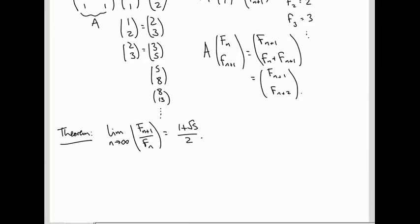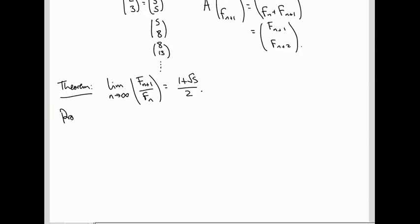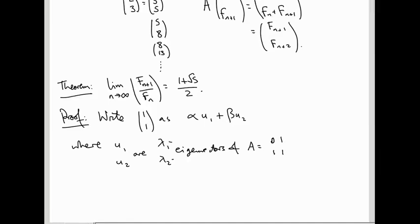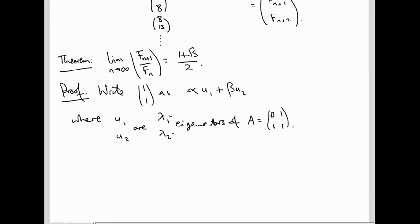Here's the proof. First of all, like in the last two applications, we're going to write our vector [1,1] as α·u1 + β·u2, where u1 and u2 are the λ1 and λ2 eigenvectors of this matrix A = [[0,1],[1,1]]. We'll figure out what λ1, λ2, u1, u2 are later. But for now it doesn't matter too much — the structure of the proof doesn't depend too much on these values.